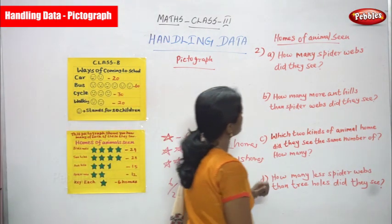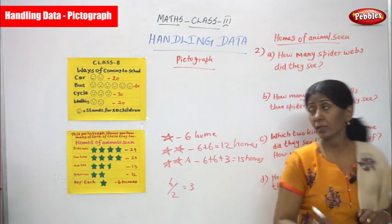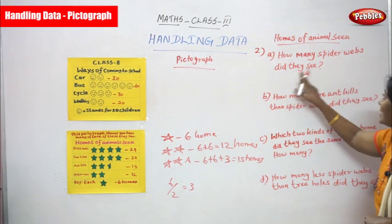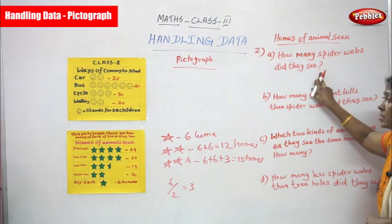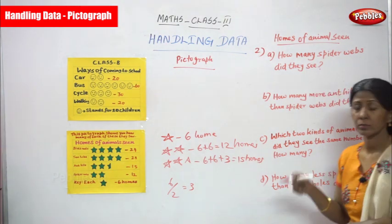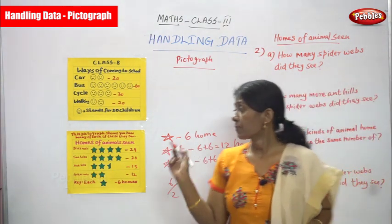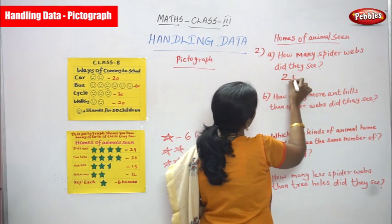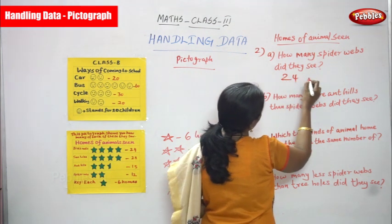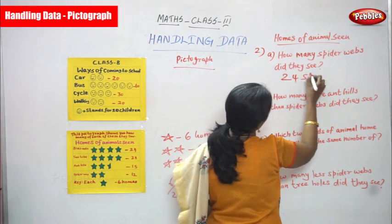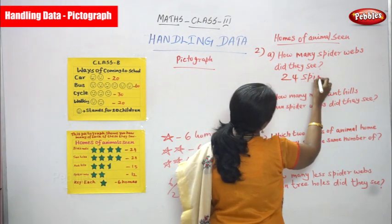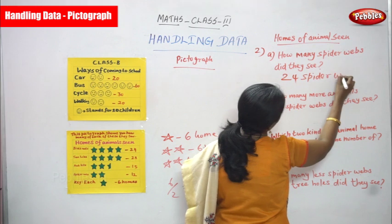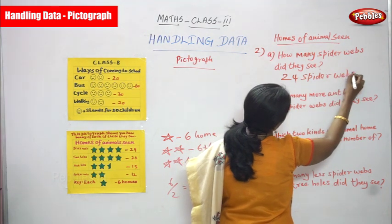First question: how many spider webs did they see? Spider webs is twelve animal homes, so the answer is twelve spider webs.